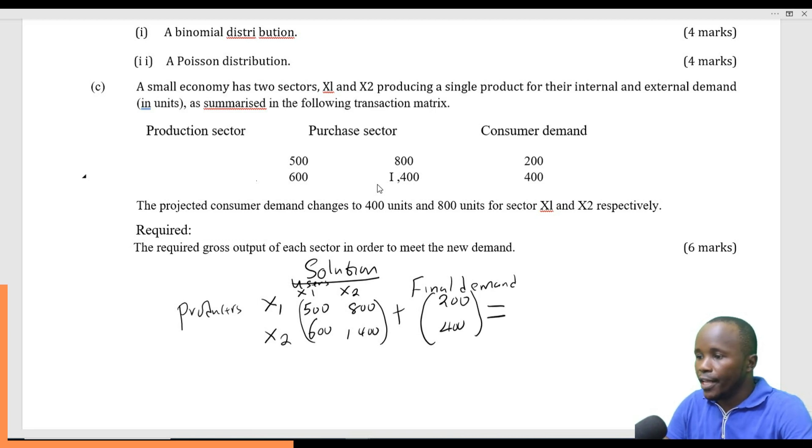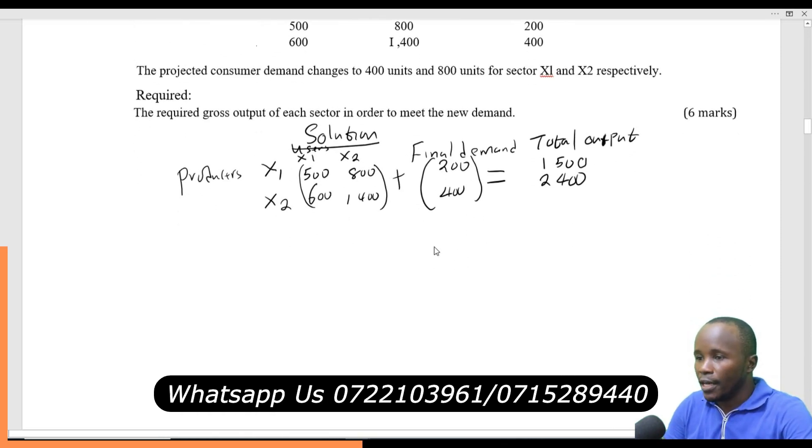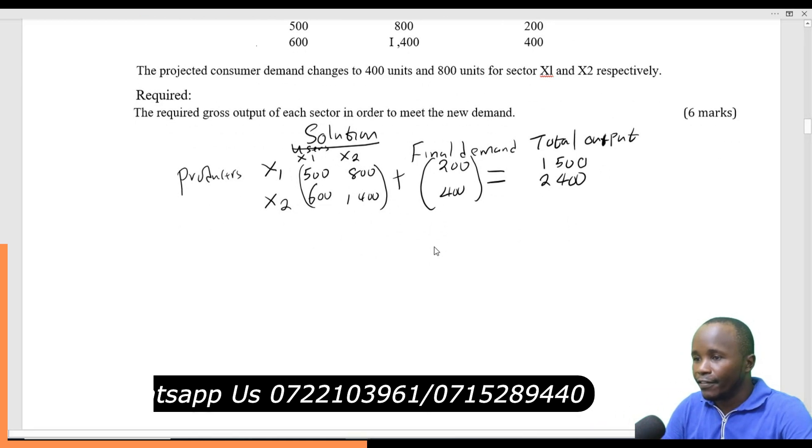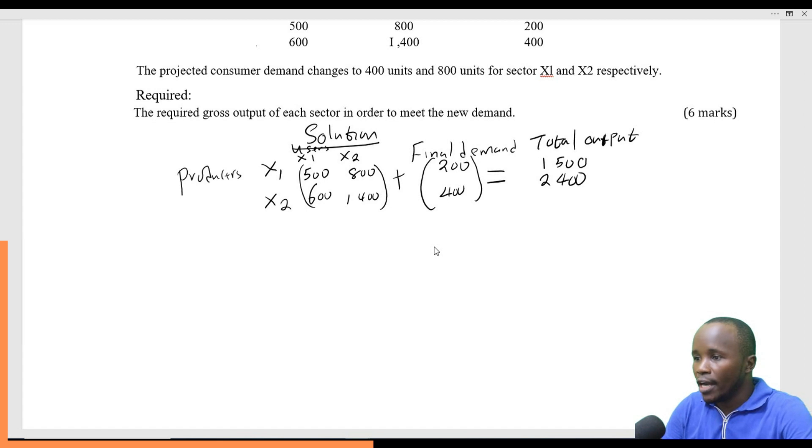We get our total output. Our total output: we add 500 plus 800 plus 200, which gives 1,500. Then 600 plus 1,400 plus 400 gives 2,400.